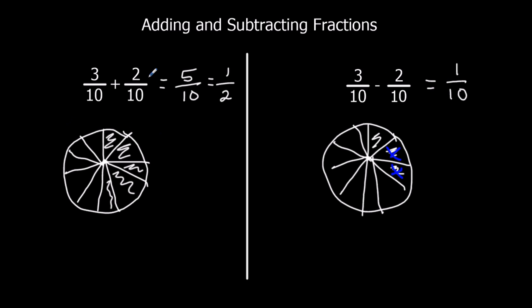So that's how we add fractions with the same denominator — we can just add the numerators. 3 tenths plus 2 tenths is 5 tenths, 3 sevenths plus 2 sevenths is 5 sevenths, and 1 sixth plus 4 sixths is 5 sixths. We just add them up as long as they're the same denominator.